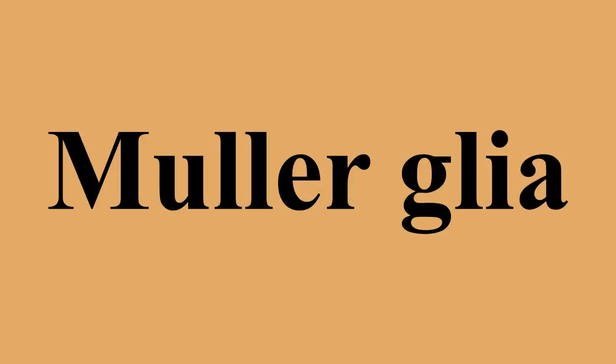Müller glia, or Müller cells, are a type of retinal glial cells first recognized and described by Heinrich Müller. They are found in the vertebrate retina, where they serve as support cells for the neurons of the retina, as all glial cells do. They are the most common type of glial cell found in the retina.